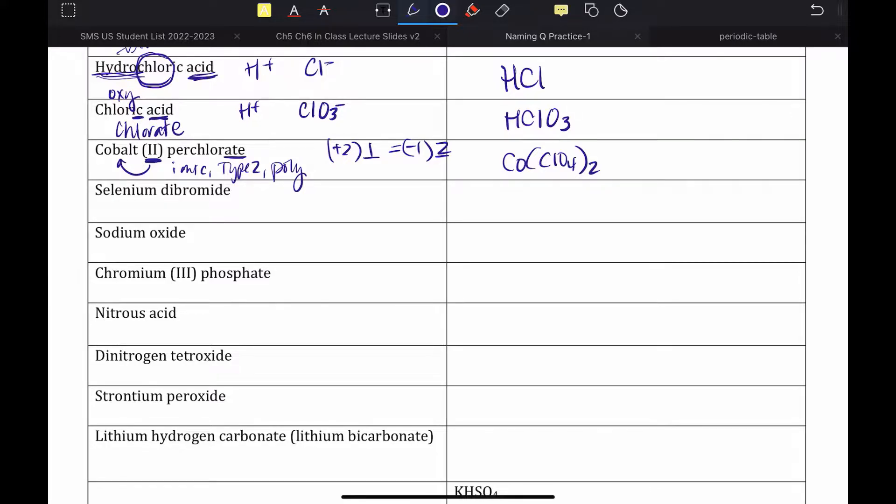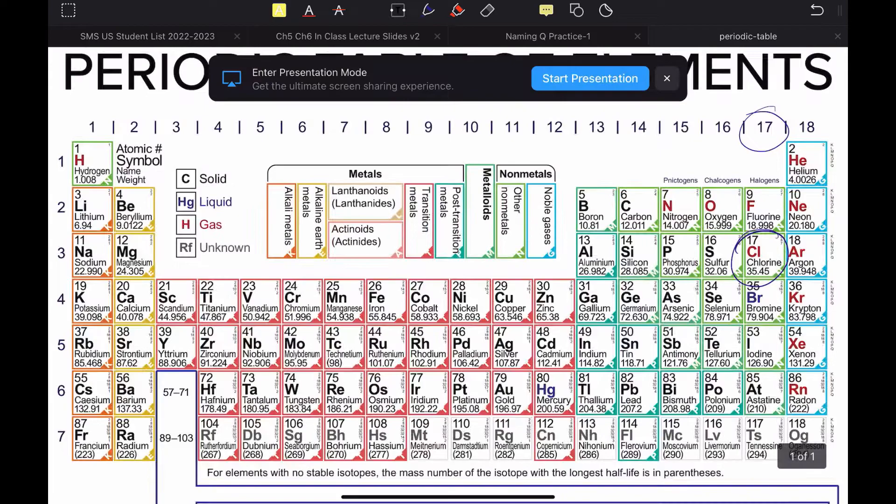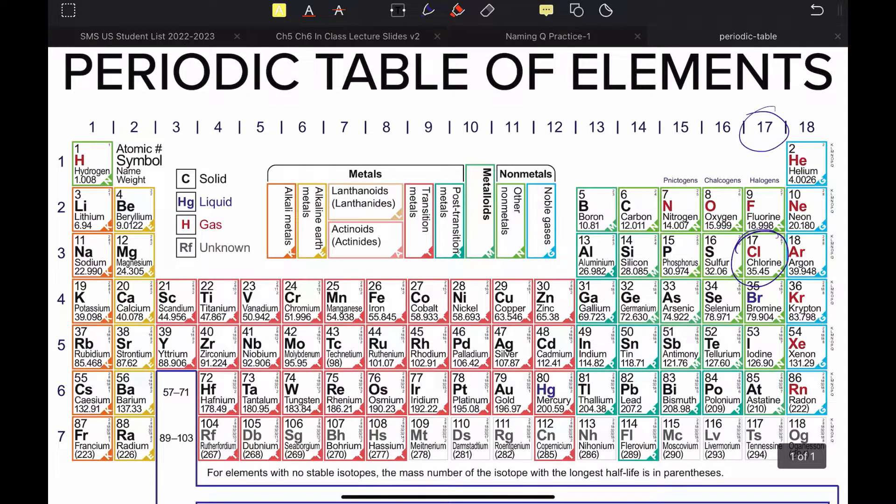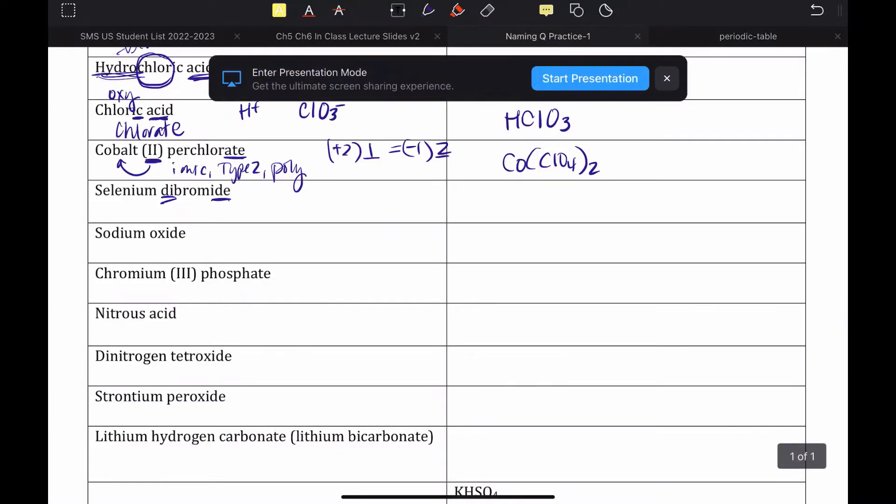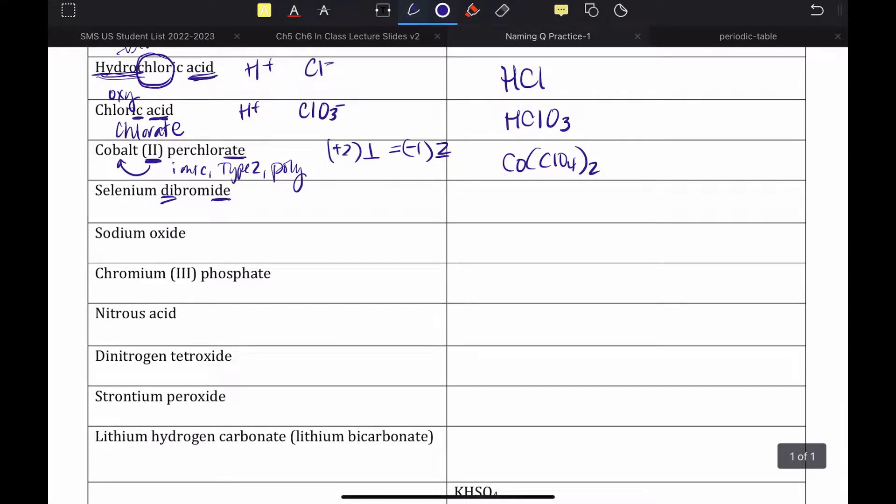Selenium dibromide. I would look at my, first I'd see the -ide ending, which tells me binary. I'd see a numerical prefix, probably molecular. I would go look at a periodic table and find selenium. Selenium, and here is selenium, here is bromine. Those are both nonmetals, which means that I am going to just write what it says, because that means this one is molecular. So, selenium dibromide.